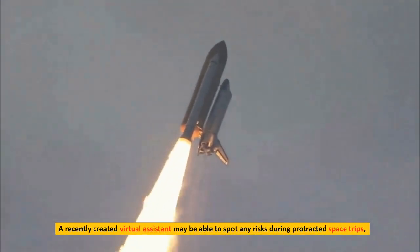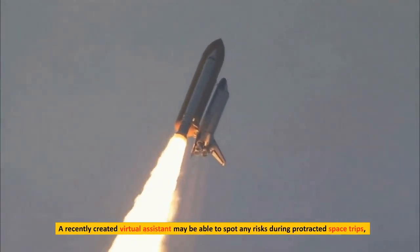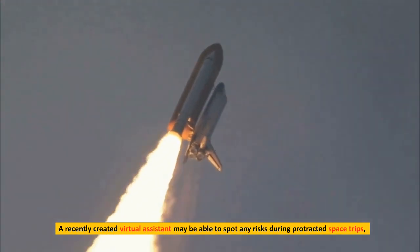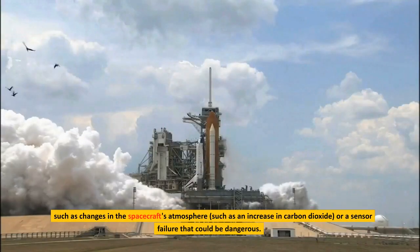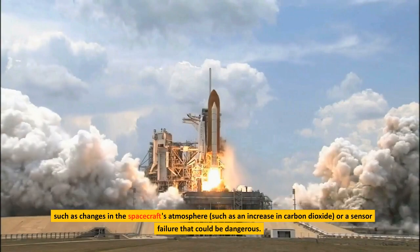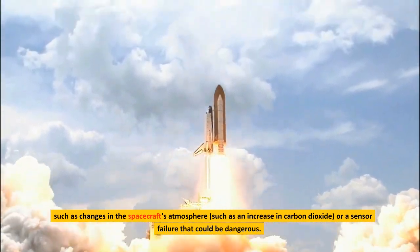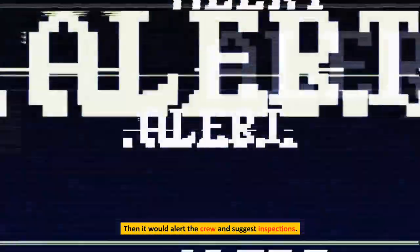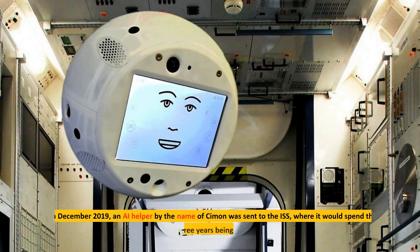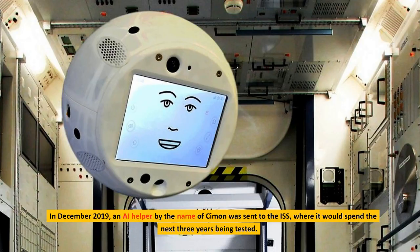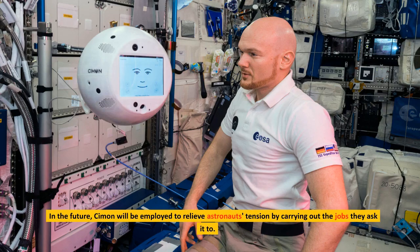A recently created virtual assistant may be able to spot any risks during protracted space trips, such as changes in the spacecraft's atmosphere, such as an increase in carbon dioxide, or a sensor failure that could be dangerous. Then it would alert the crew and suggest inspections. In December 2019, an AI helper by the name of Simon was sent to the ISS, where it would spend the next three years being tested. In the future, Simon will be employed to relieve astronauts' tension by carrying out the jobs they ask it to.